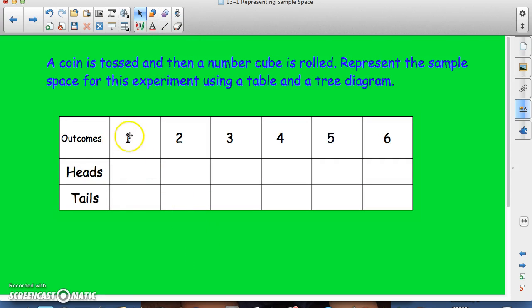When you set up your table, you should have your outcomes of the number cube here and then the outcomes of the coin right here. So now we can go ahead and list out our sample space. So we could get a one and a heads, we could get two and heads, three and heads, and so on.